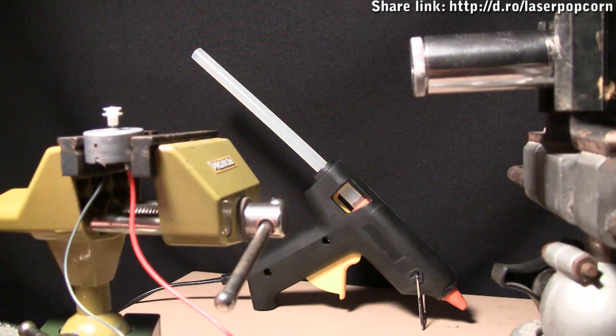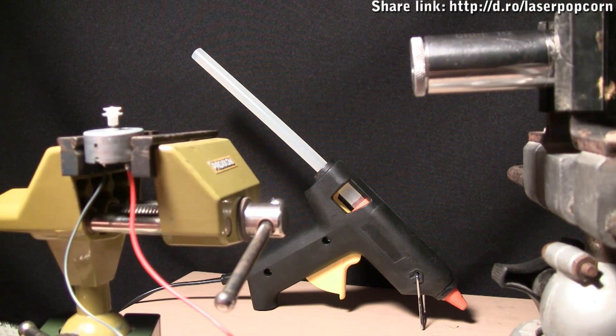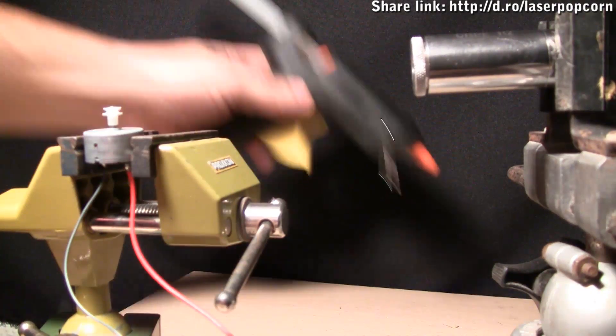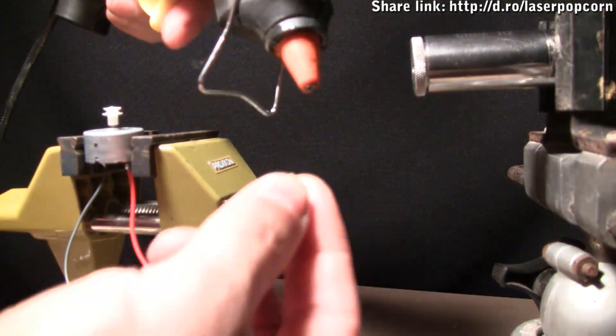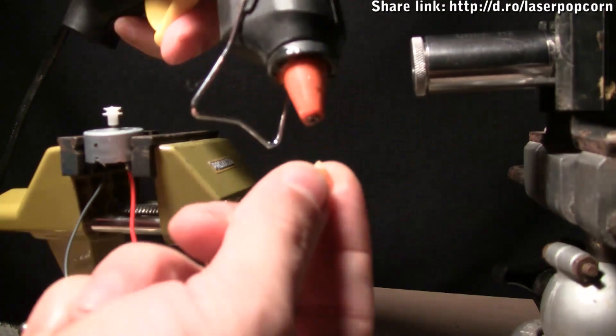To attach the kernel of corn to the motor spindle, we'll use hot melt glue. We take the end of the kernel and apply a bit of hot melt glue to it, like so.